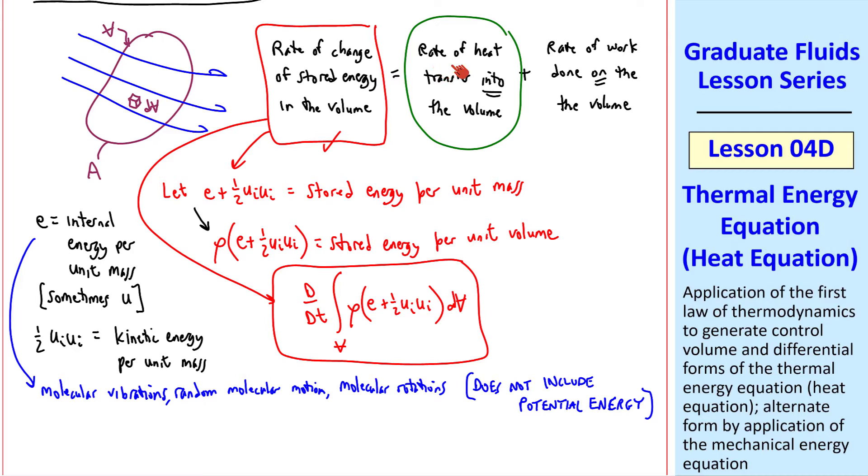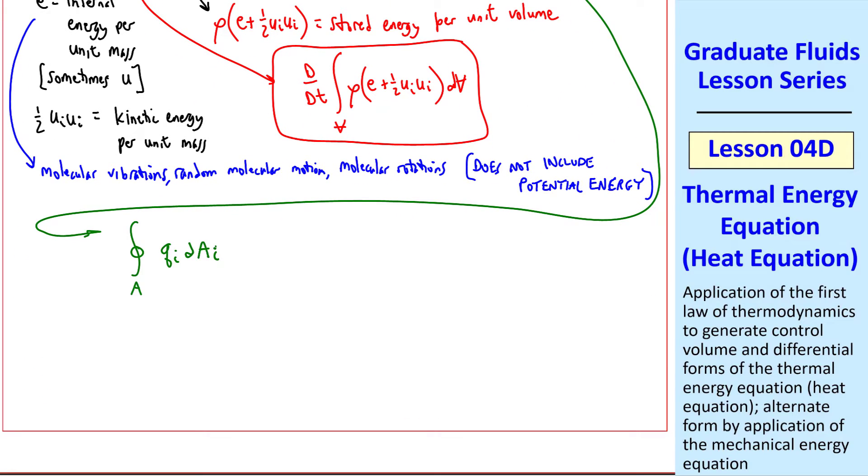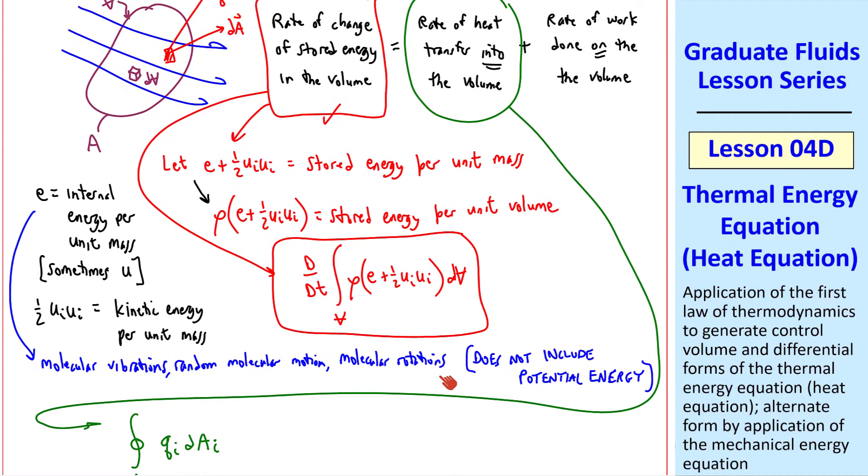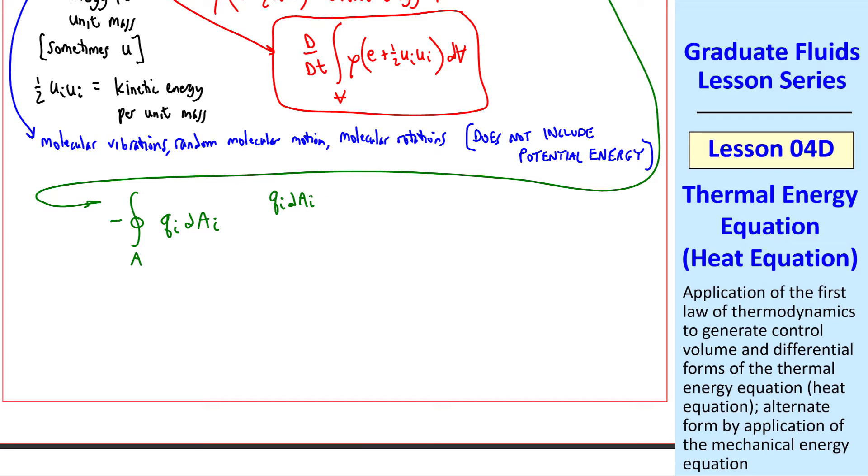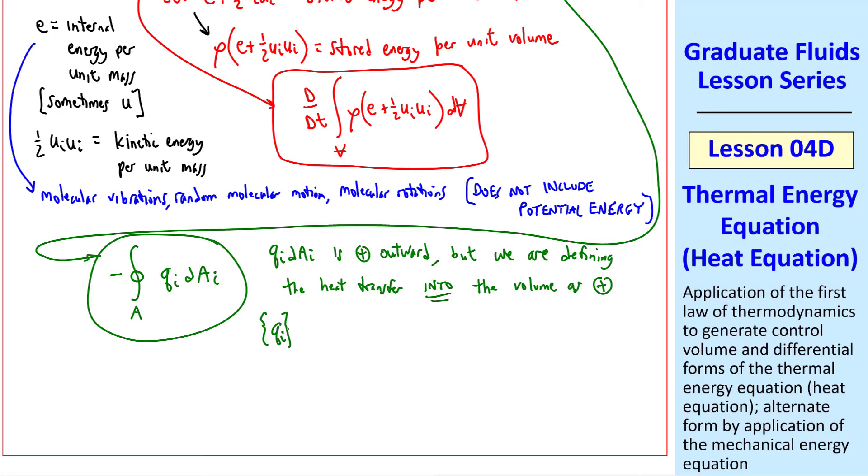Now consider this second term, the rate of heat transfer into the volume. If we have some differential element dA of the area of the surface, and q is the heat flux vector, we can analyze this term as the integral over the entire area, qi dAi, which is just the dot product of vectors q and dA. But we need a negative sign, because the dot product of q and dA is positive outward. But we are defining the heat transfer into the volume as positive. So this is now our second term in this equation. I should mention that the dimensions of qi are energy per area per time, and we call it the heat flux vector.